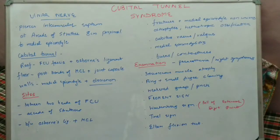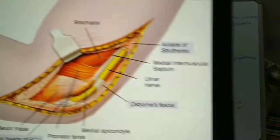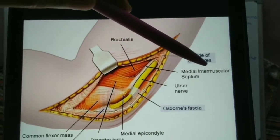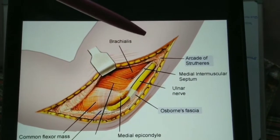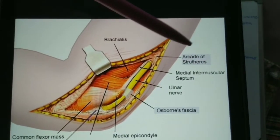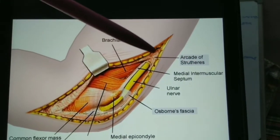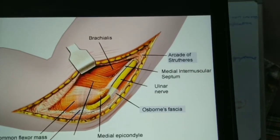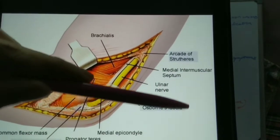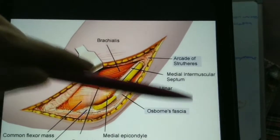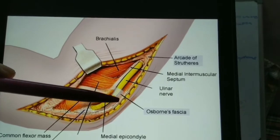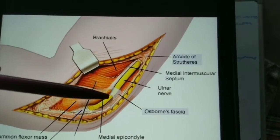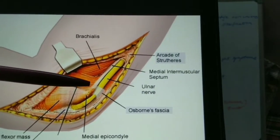The various areas where compression of the ulnar nerve can occur at the elbow: firstly, at the arcade of Struthers, which is the opening in the medial intermuscular septum. Then there is Osborne's fascia, which is one of the boundaries of the cubital tunnel.